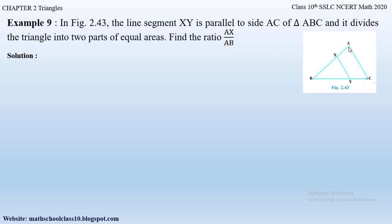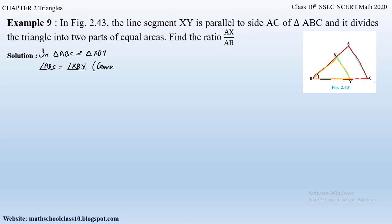To find this ratio, first let us prove triangle ABC and triangle XBY to be similar, so that we can find the ratio of the sides. In triangle ABC and triangle XBY, we can observe that angle ABC is equal to angle XBY because it is a common angle for both triangles.